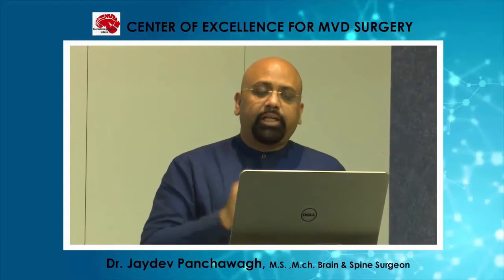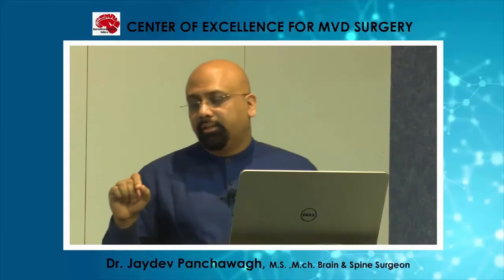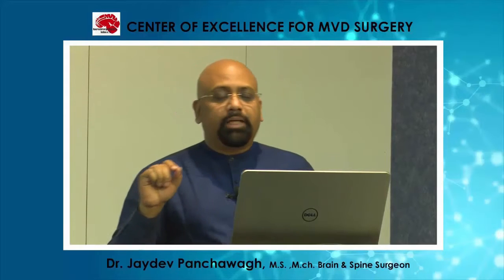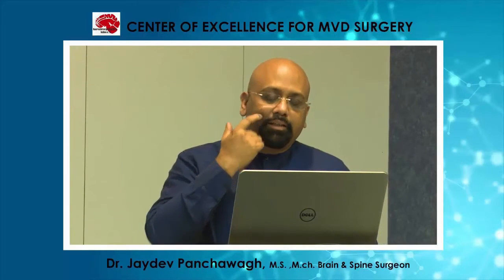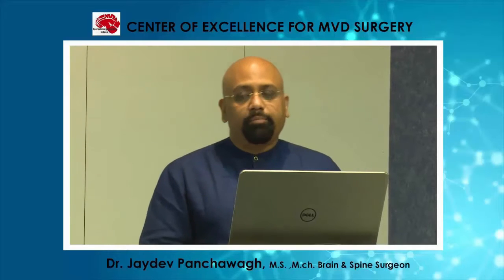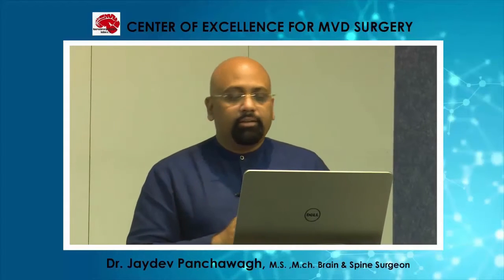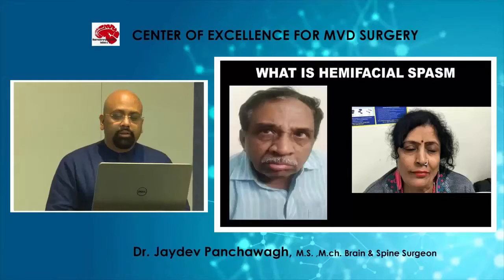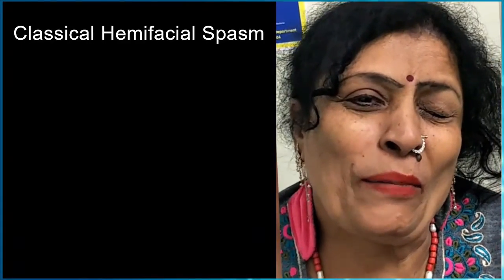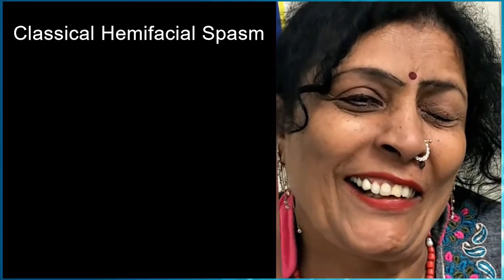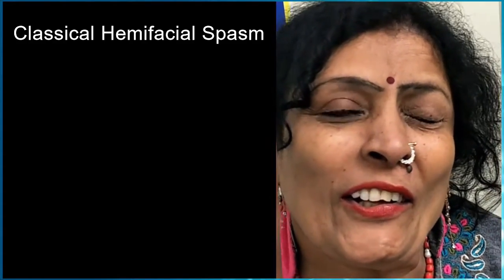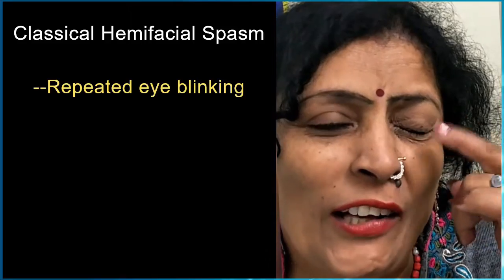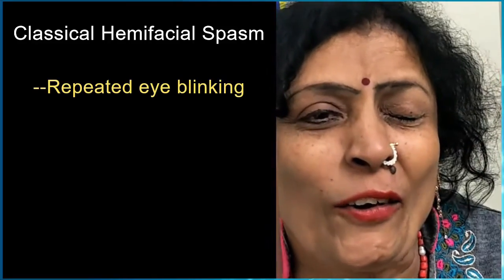An atypical type of Hemifacial Spasm is one in which the spasms start near the angle of the mouth and then spread towards the eye, but this is by far very uncommon. Here is yet another example of Hemifacial Spasms, wherein as soon as a person starts talking, there is blinking of the eye and the face gets pulled to one side repeatedly.